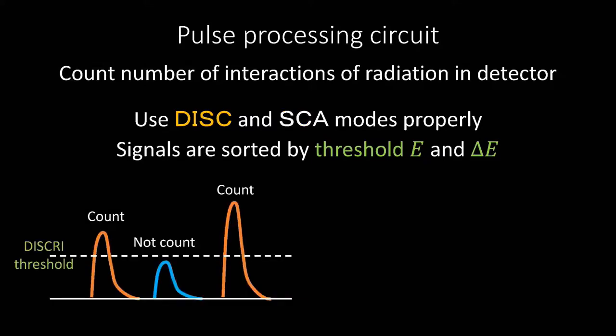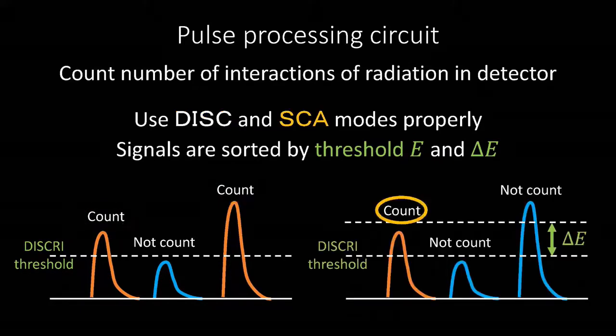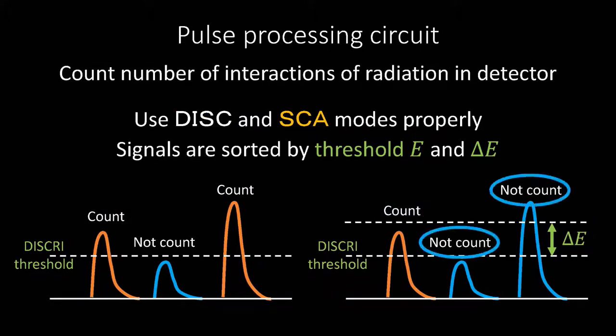First, let's discuss the DISC mode. It is a mode that sorts signals by DISC, or threshold. All pulses that exceed the threshold are counted. SCA mode counts only the signals in the range of delta E above the threshold. It does not count signals that are smaller or larger than this range. These two modes are used in different ways to perform the experiment.